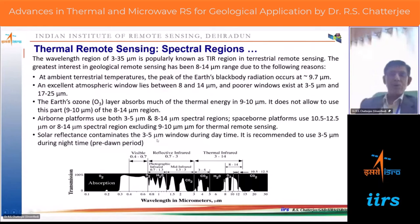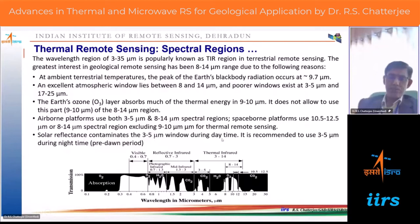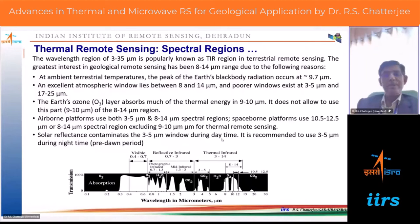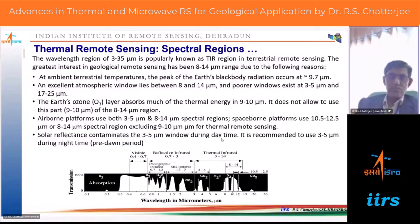Another important point: up to 5 micrometers there are some solar reflectants. So if you do thermal sensing during daytime, it is recommended that you always use 3 to 5 micrometers during nighttime only. Nighttime — specifically pre-dawn — is most important because in that period different topographic elevations will be nullified.